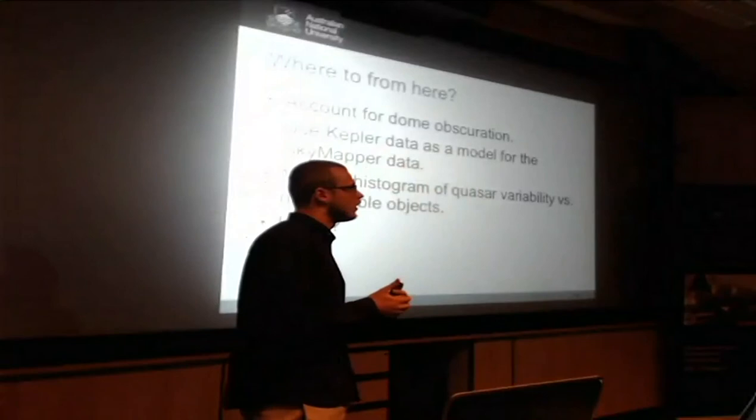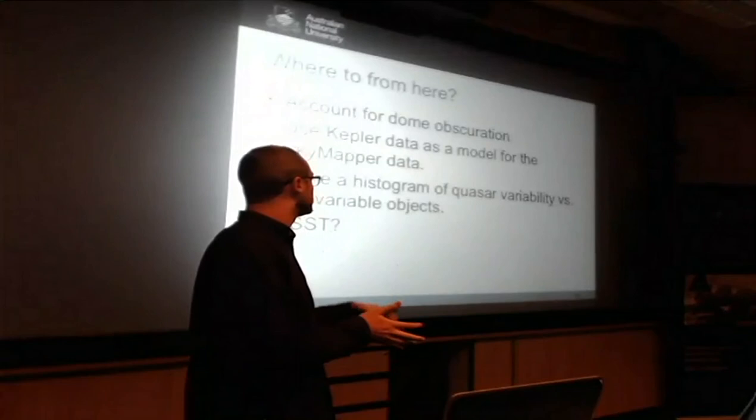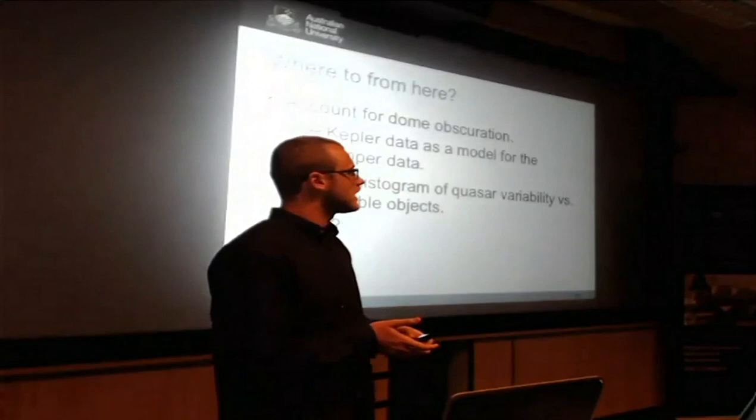Another thing that we could do is just make a histogram of the quasar variability versus the non-variable objects, and that should give us a better idea in general how much these quasars are varying, which will again give us another indication of what sort of sensitivity we need to get down to.